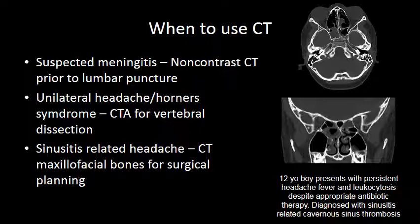CT is often used prior to lumbar puncture in patients with suspected meningitis, to make sure there is no mass in the brain or other reason that may predispose the person to trans-tentorial or transforaminal herniation when CSF pressure is lowered. You also want to obtain a CTA in patients presenting with unilateral headache and Horner syndrome, because vertebral artery dissection is a primary consideration that you want to rule out.